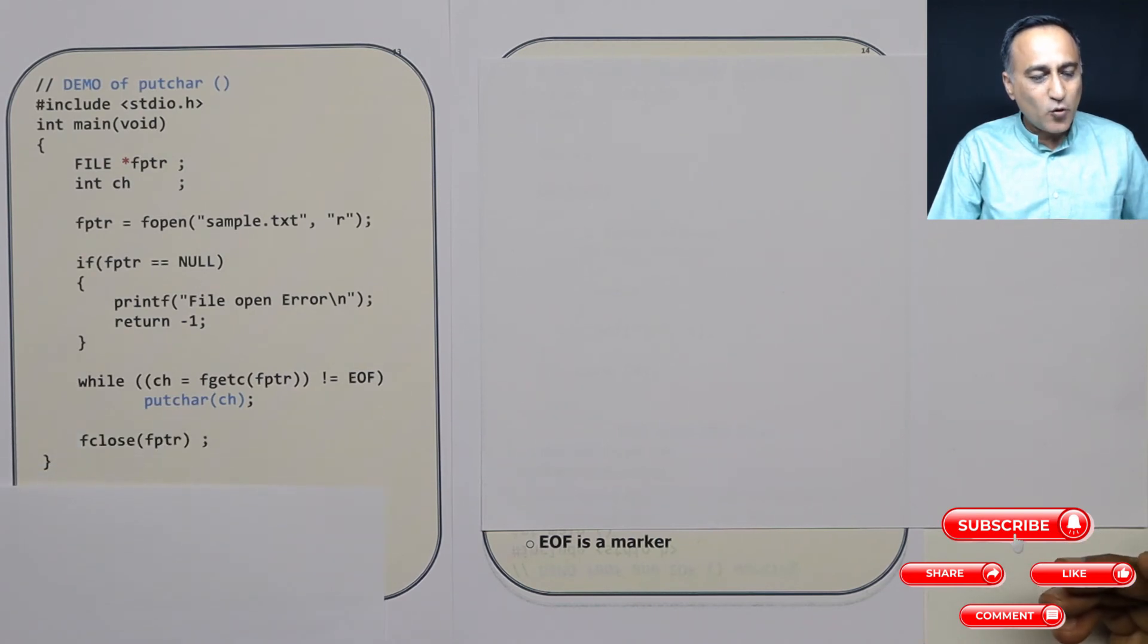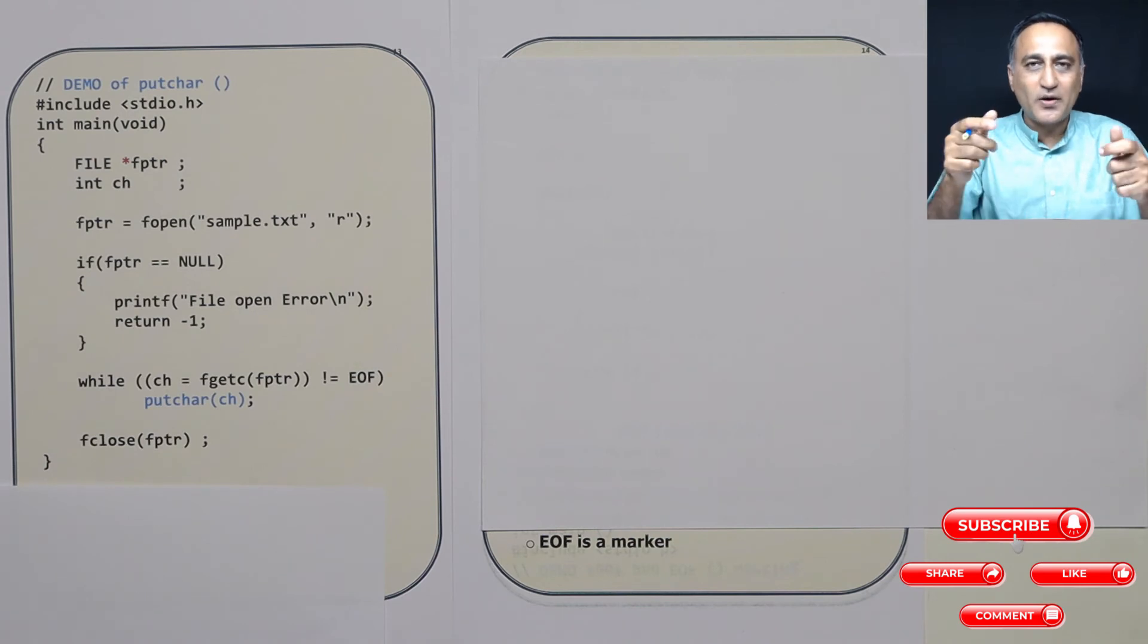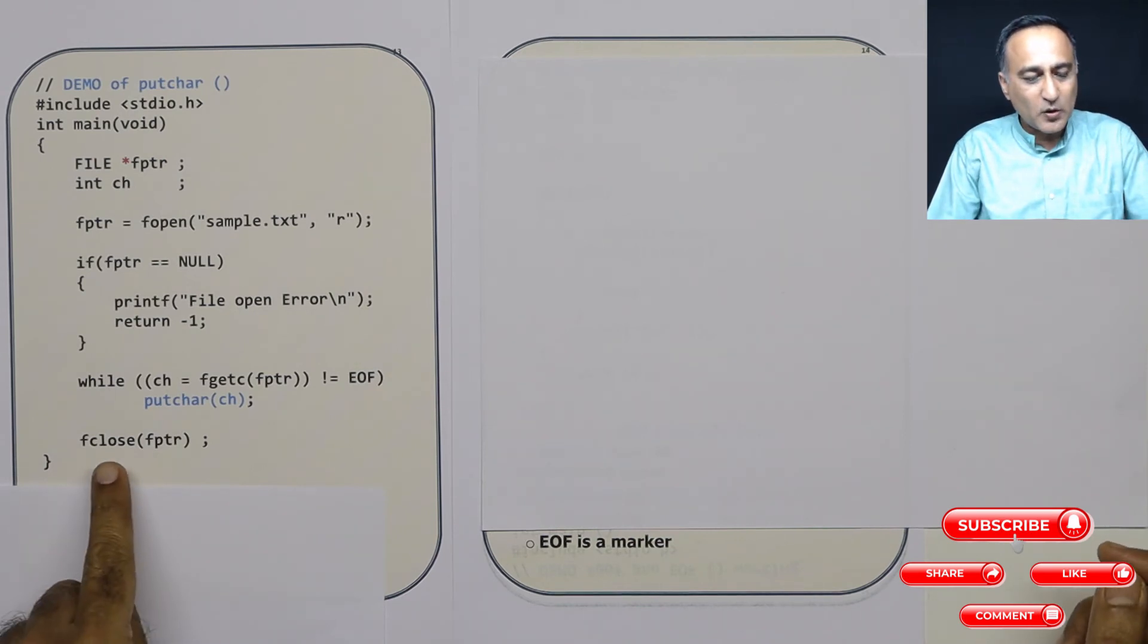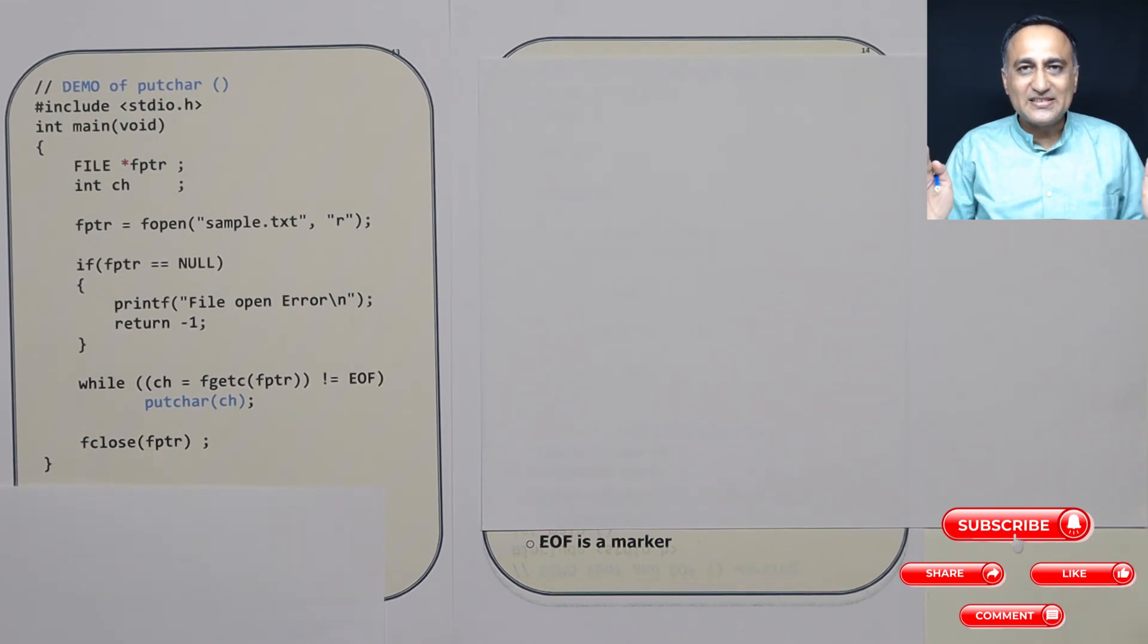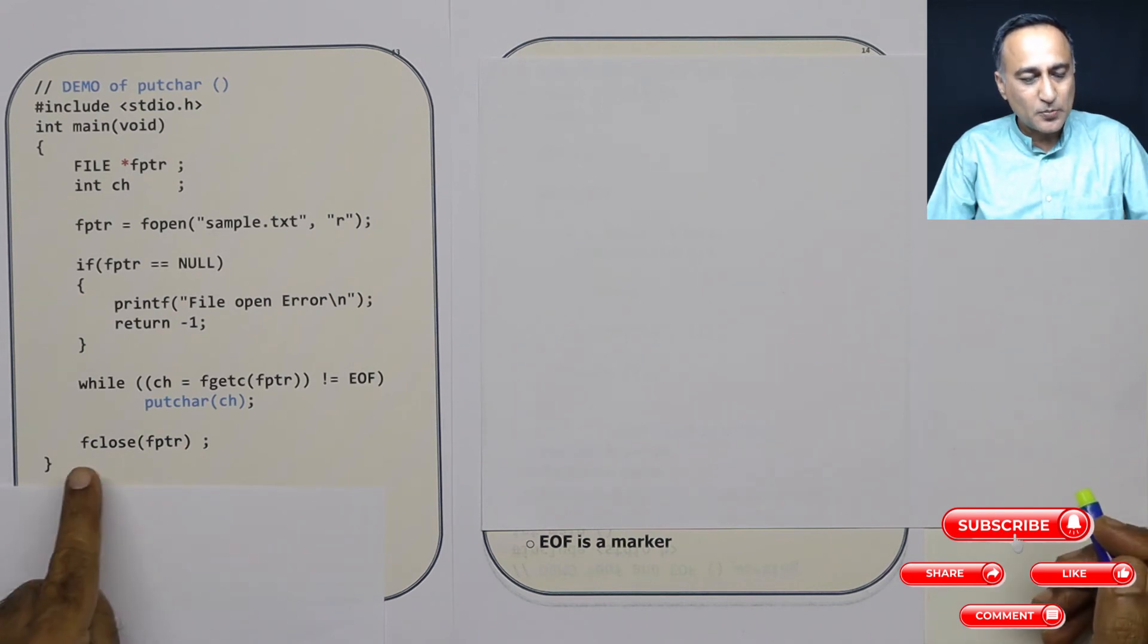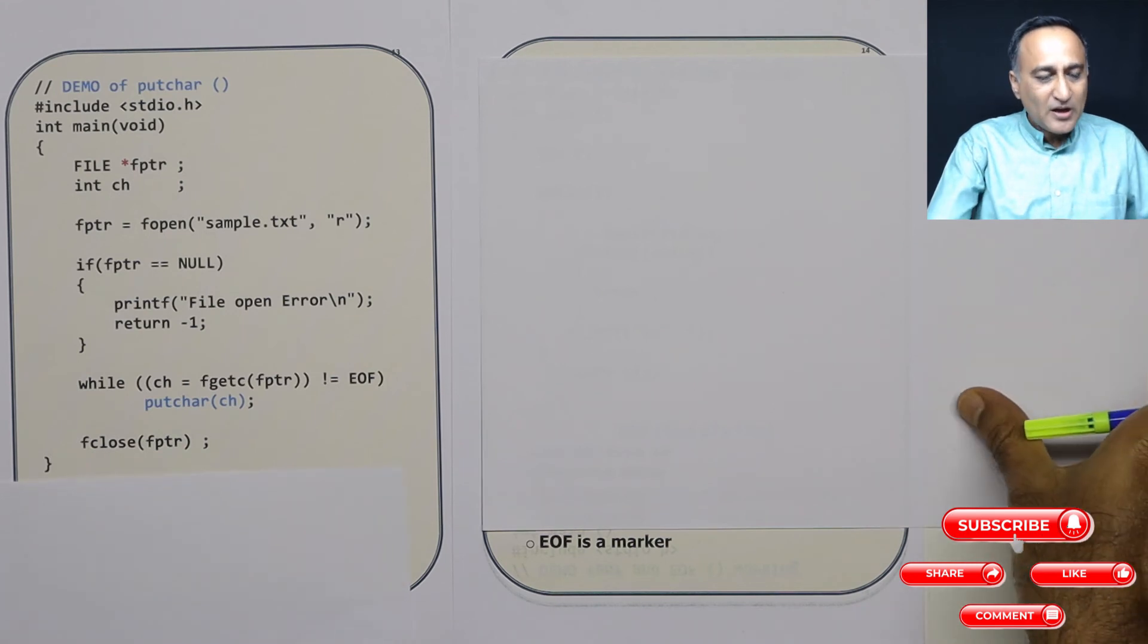After you open a file for reading, just as you take out a file from the drawer, you read and put it back, you're required to write this fclose file pointer because that is the processing has to be done to indicate that the proper and complete processing has been done. So please be sure you write fclose fptr.